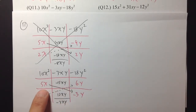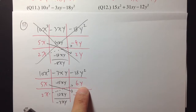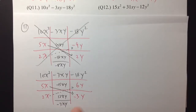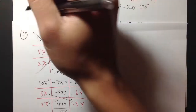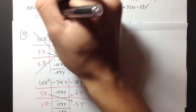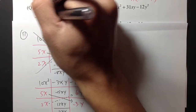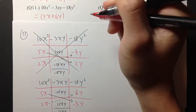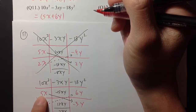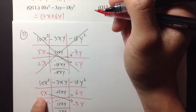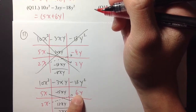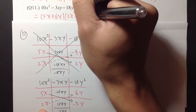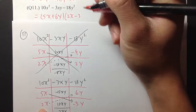So we got our answer: (5x + 6y)(2x − 3y). This is 5x plus 6y — and remember to write your answer across — times 2x minus 3y.